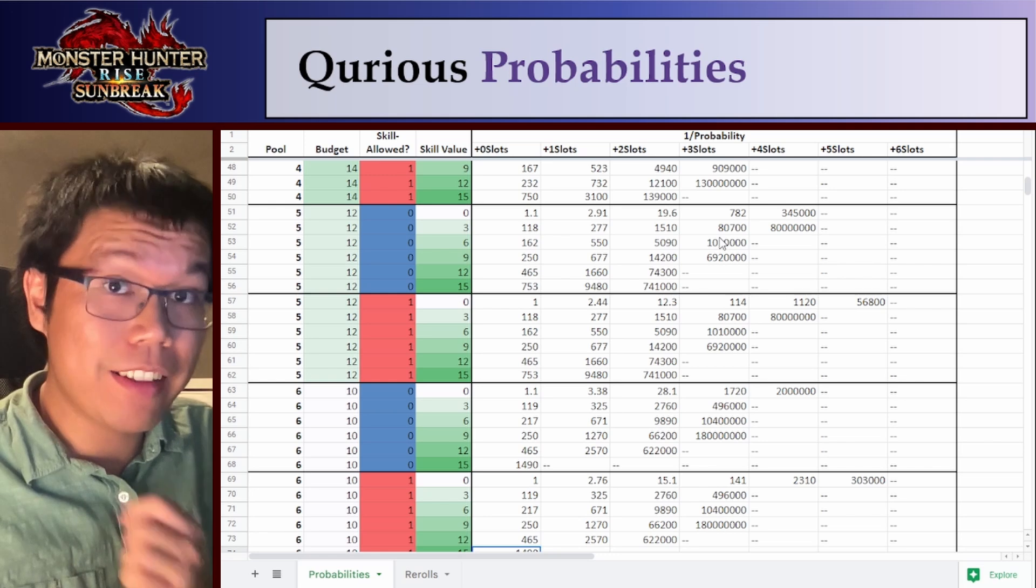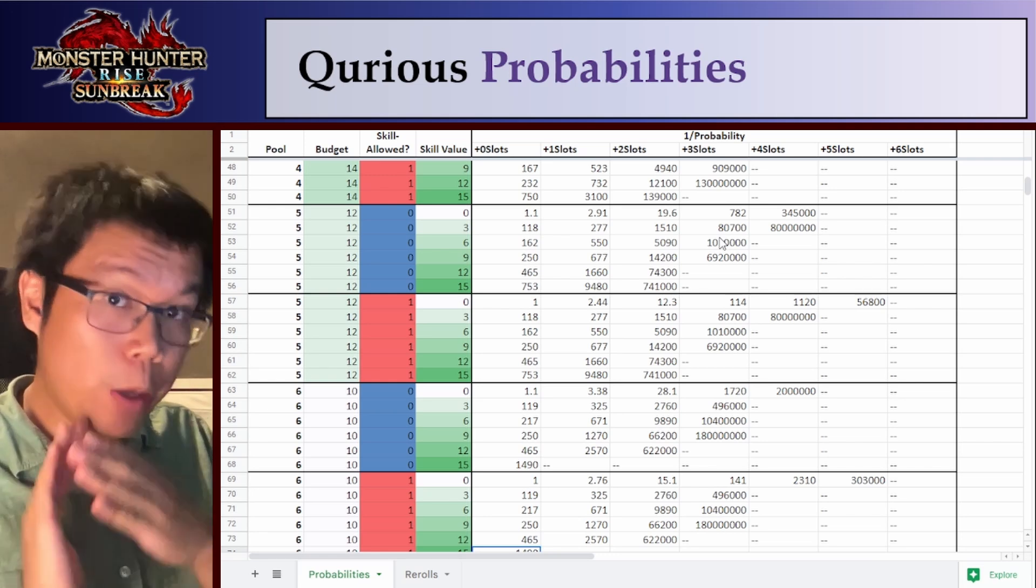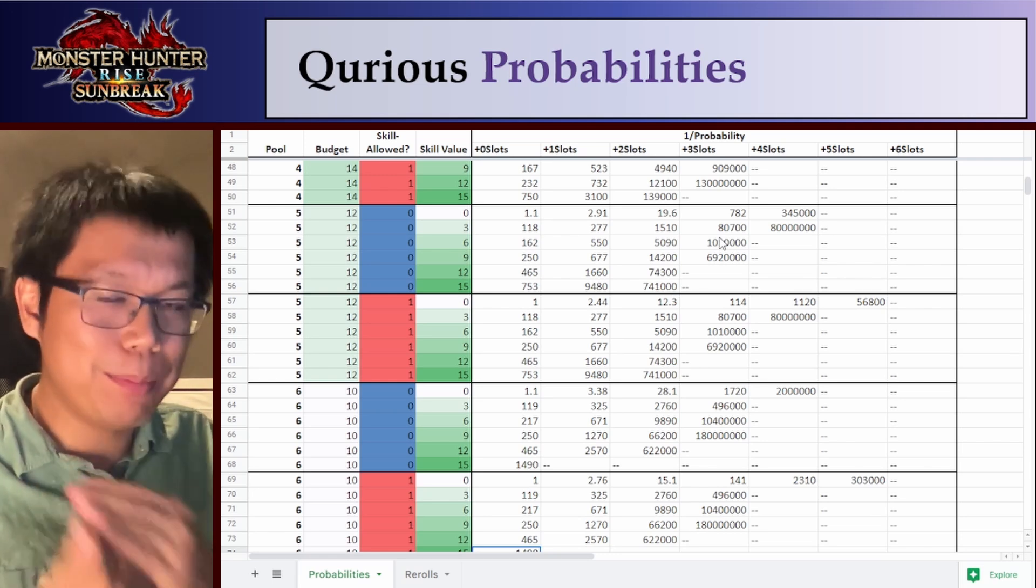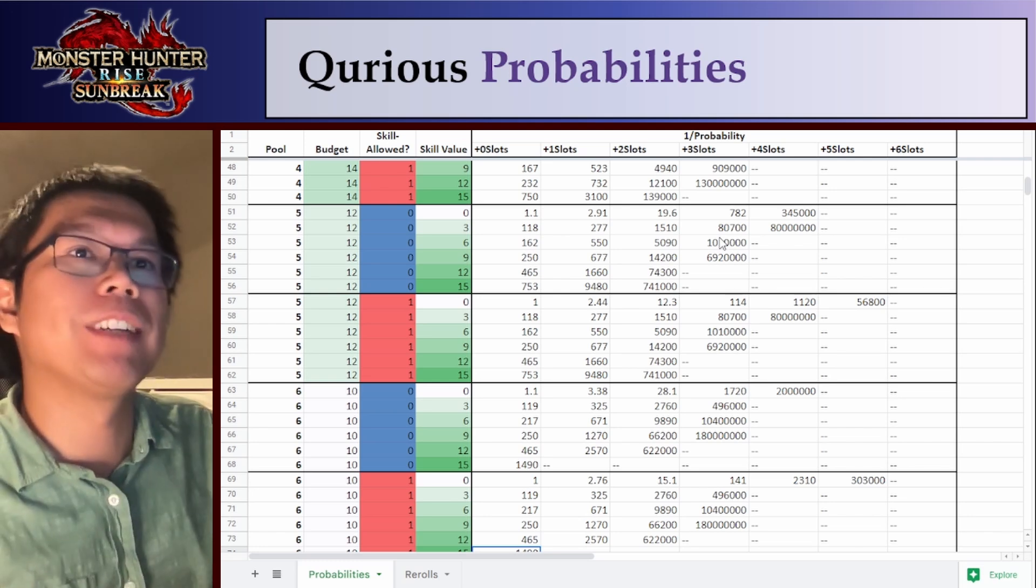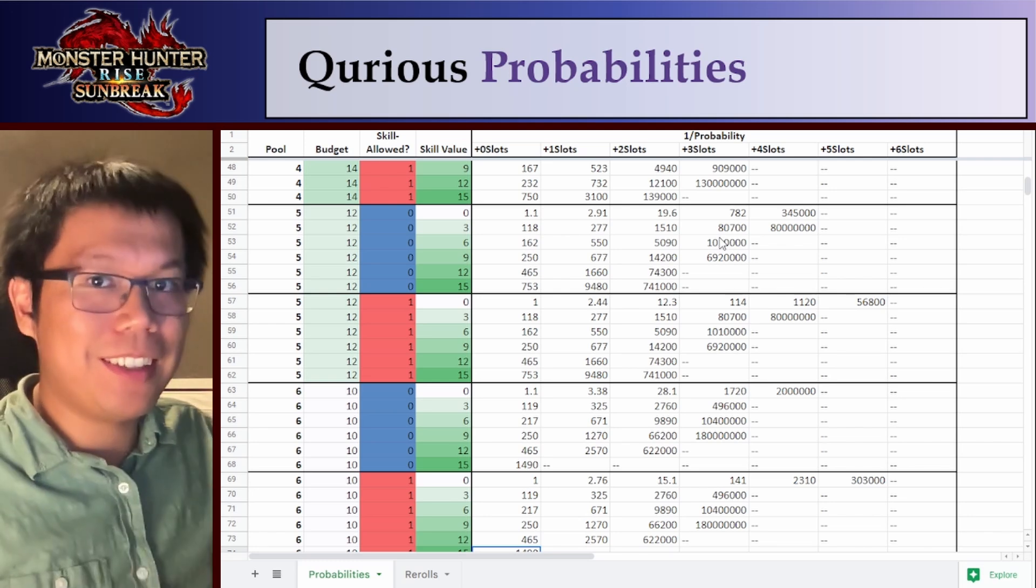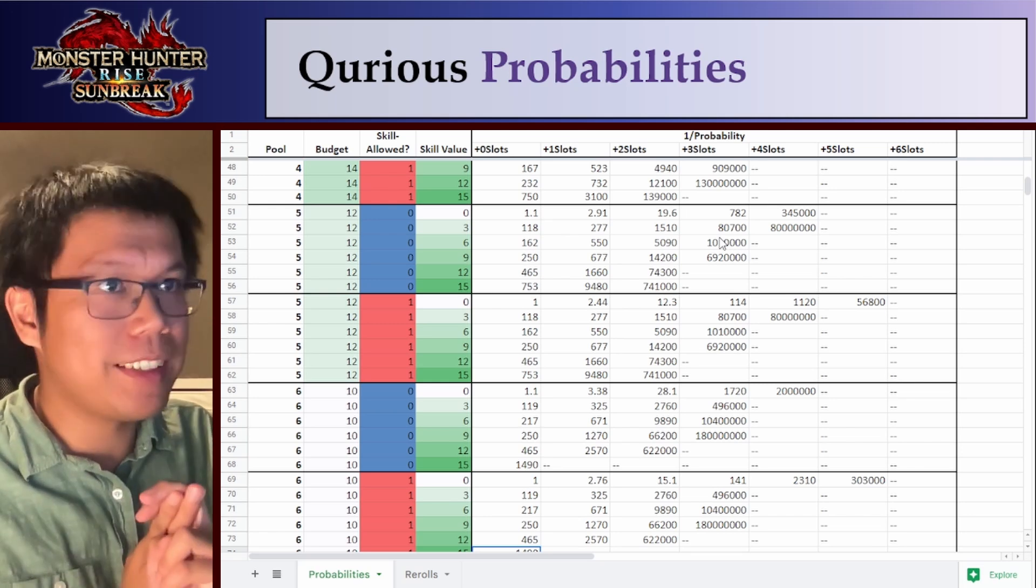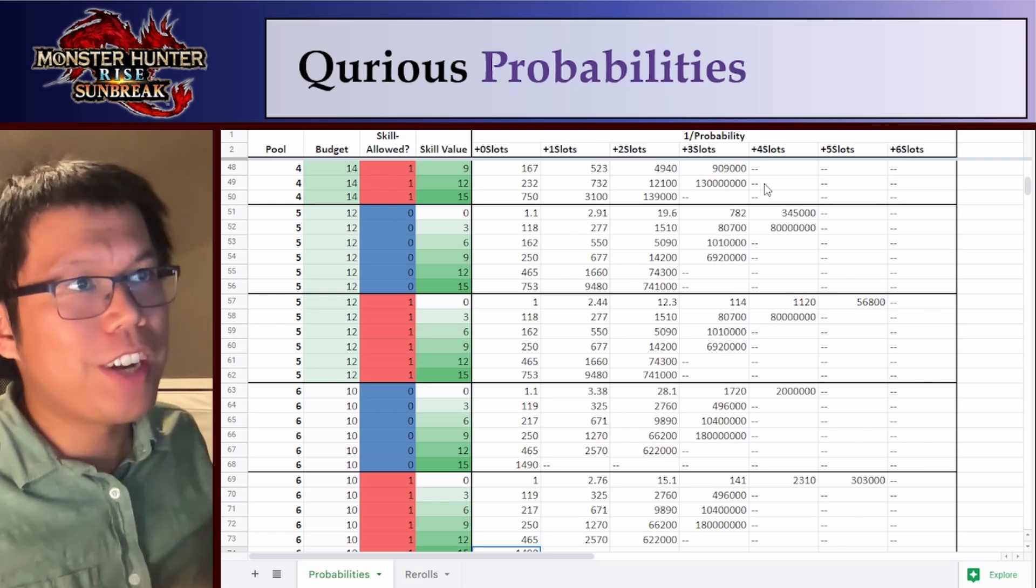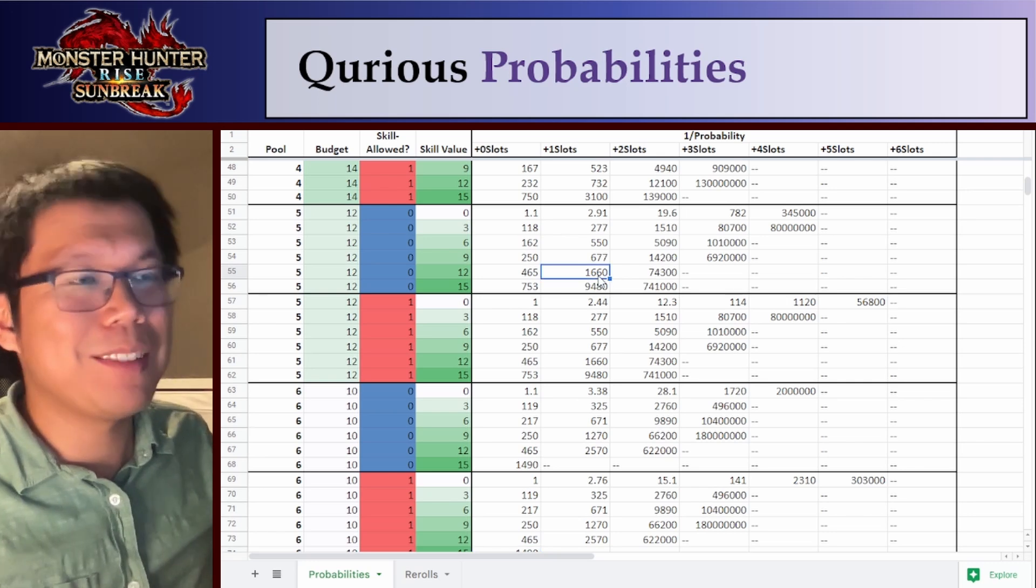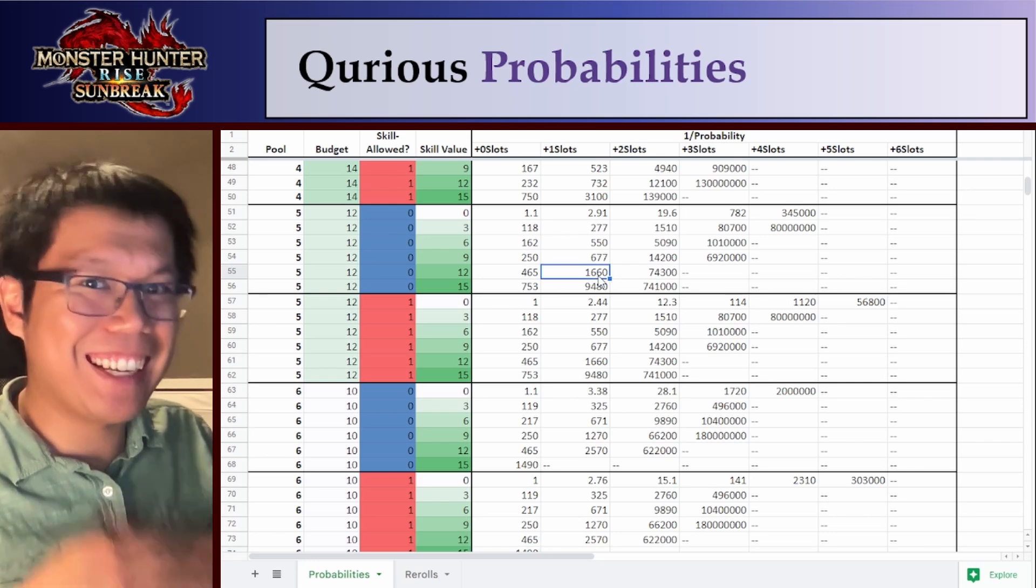I just finished calculating the chances of getting every Curio Armor Augment in Monster Hunter Rise Sunbreak title update one. So for example, let's say you want a Kaiser Helm with Chain Crit and a plus one slot, your chances of getting that are 1 in 1660.